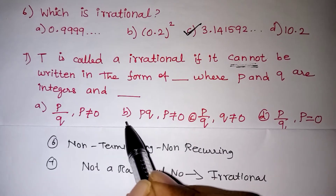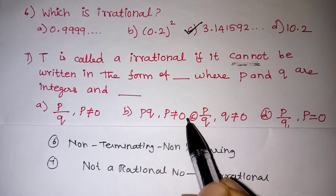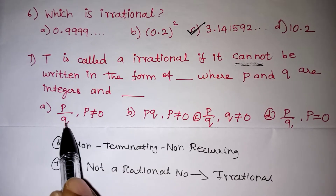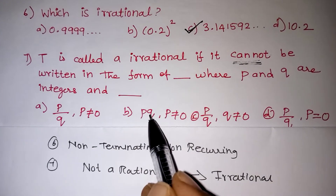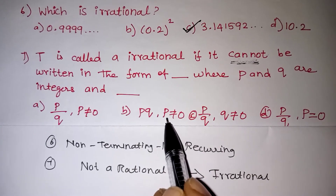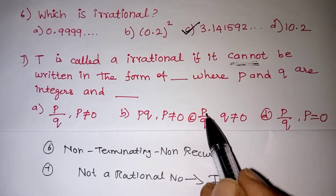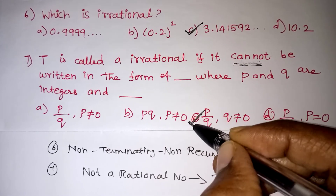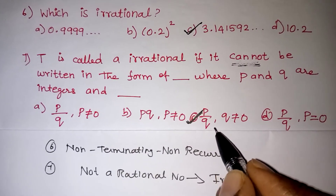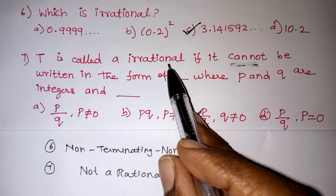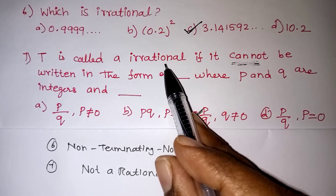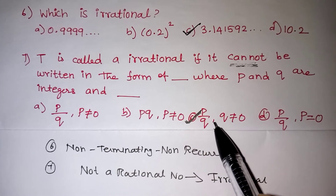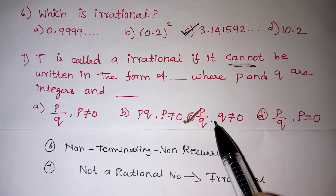Look at all the options — which is the definition for a rational number? The option stating p/q where p is not equal to 0 is given — that is wrong, because it should be the denominator that is not equal to 0. Look at the third option: p/q where q is not equal to 0 — this is the definition for a rational number. This cannot be the condition for an irrational number. You have to pick the term which should not be a condition for irrational, and this rational number definition is the answer.